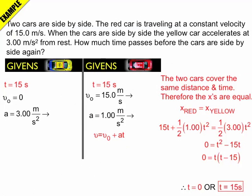So I can find it for the red car in this case. So v is equal to 15 meters per second plus 1 meter per second squared times 15 seconds. Do a little bit of math, and I find that the red car is equal to 30 meters per second.